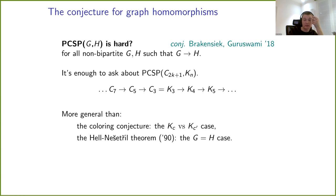On one hand, this conjecture generalizes the classical coloring conjecture — the clique versus clique case. On the other hand, it generalizes the Hell-Nešetřil theorem, which is the G equal to H case. We understand quite well that CSPs for undirected graph templates are NP-hard, but even the shortest proof involves case analysis on graph structure. If we prove this more general statement, then you can't do any kind of analysis on odd cycles and cliques, so you'd have to prove it using quite different methods.